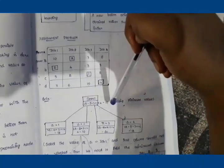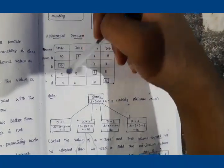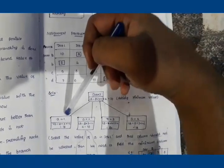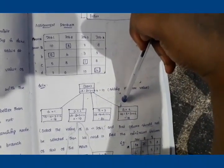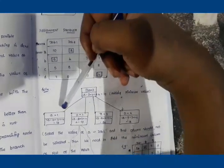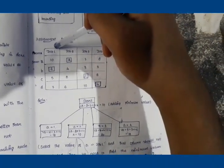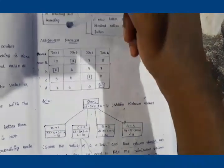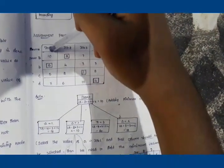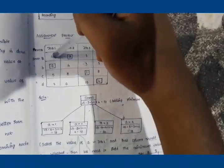From the root, Person A can be assigned to any of the four jobs, giving four possibilities. If A is assigned to Job 1, the cost is 10. Once A is assigned to Job 1, that entire column must be hidden — it should not be selected further for the other persons.